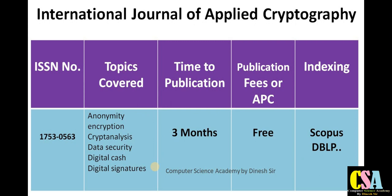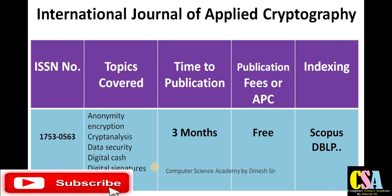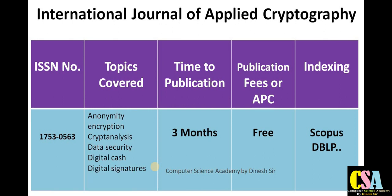Next is the International Journal of Applied Cryptography, ISSN 1753-0563. This is the best journal for cryptography and computer security, and it is a rapid publication journal. Indexing includes Scopus and DBLP. Your research paper will get published within three months, and you will receive notification of acceptance, rejection, or minor changes within one month maximum.